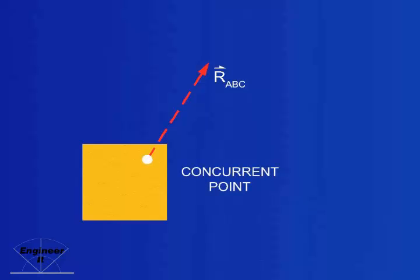Together, the concurrent point of resultant AB and vector C, and the concurrent point of resultant BC and vector A define the direction of the resultant ABC. This makes sense, as they are both points on its line of action.